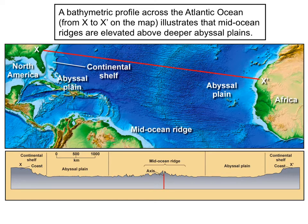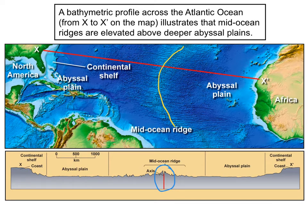What's shown here is a bathymetric profile across the Atlantic Ocean. The first thing that should pop out at you is that the oceans are not flat — they have features, going up and down. The second thing is this feature in the middle of the oceans where there's a bathymetric high, called the mid-ocean ridge. In the cross section you can see it right here, and in the map view it's the feature cutting across the Atlantic Ocean.